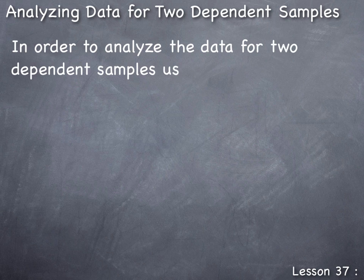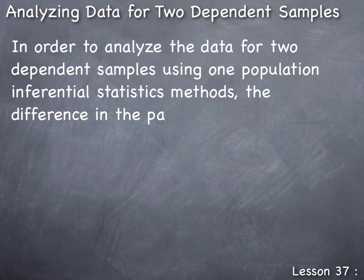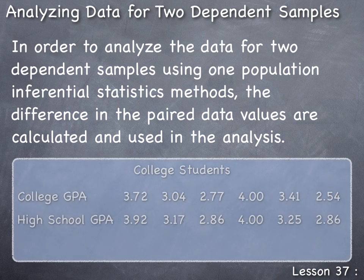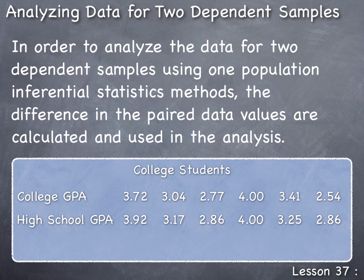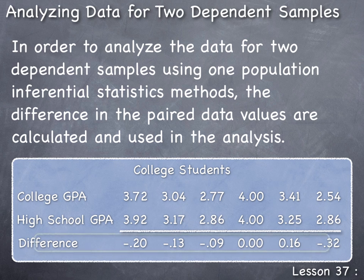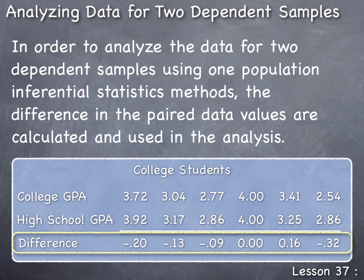In order to analyze the data for two dependent samples using one population inferential statistics methods, the difference in the paired data values are calculated and used in the analysis. When we have two dependent samples, we have two sets of data collected from one population. To use the one population method, we need one list of data. The solution is to take our two lists of data and turn it into one list by calculating the difference between the two data values — taking the first data value and subtracting the second — for each of the paired data values for all subjects in the sample.